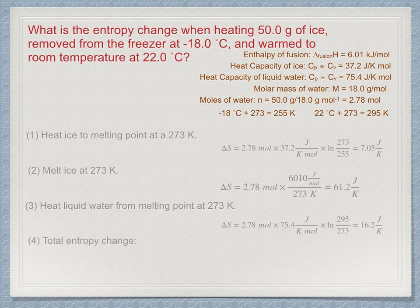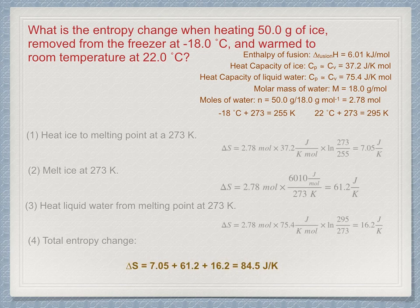And the total entropy change is therefore 7.05 plus 61.2 plus 16.2 or 84.5 joules per Kelvin. Notice how the largest contribution to the overall change came from the melting process itself which is about 72%. Changing from a solid to liquid clearly entails a large change in entropy. The rest which is about 28% was just from the heating.